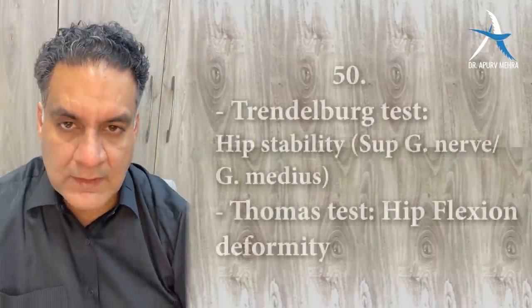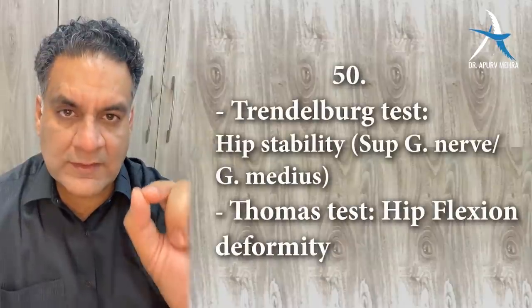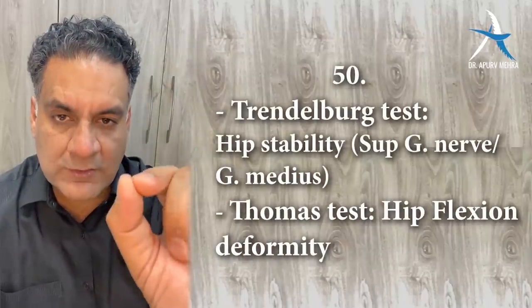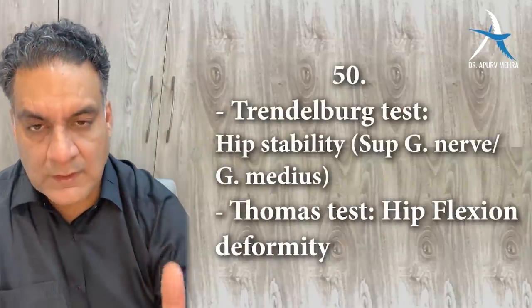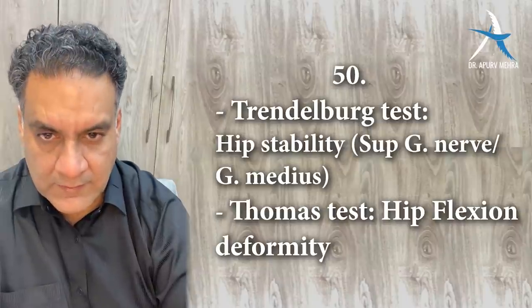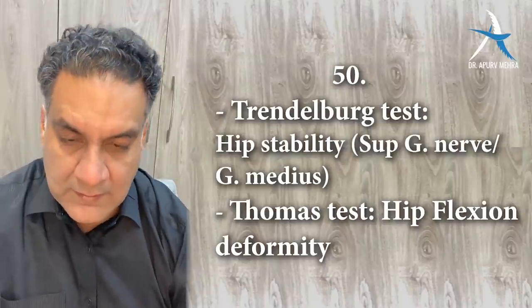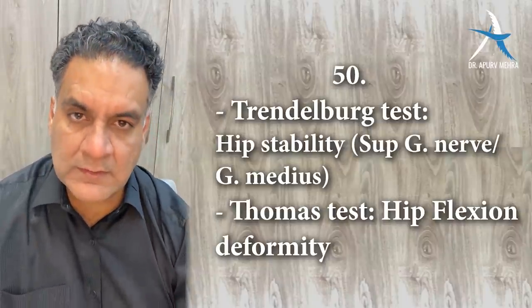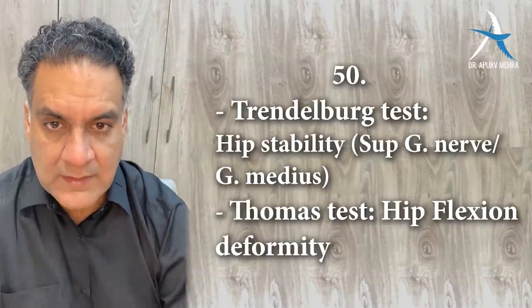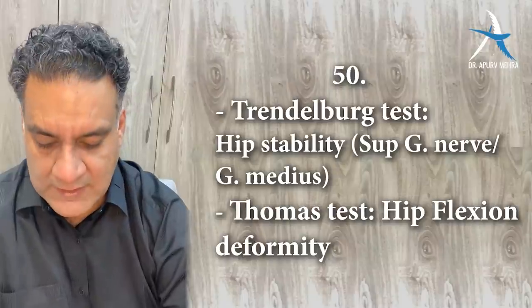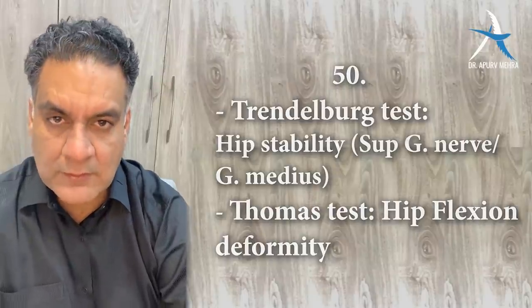Trendelenburg test is for the stability of the hip joint — it involves the superior gluteal nerve and gluteus medius. Thomas test is for hip flexion deformity. So we are halfway done — 50 points.